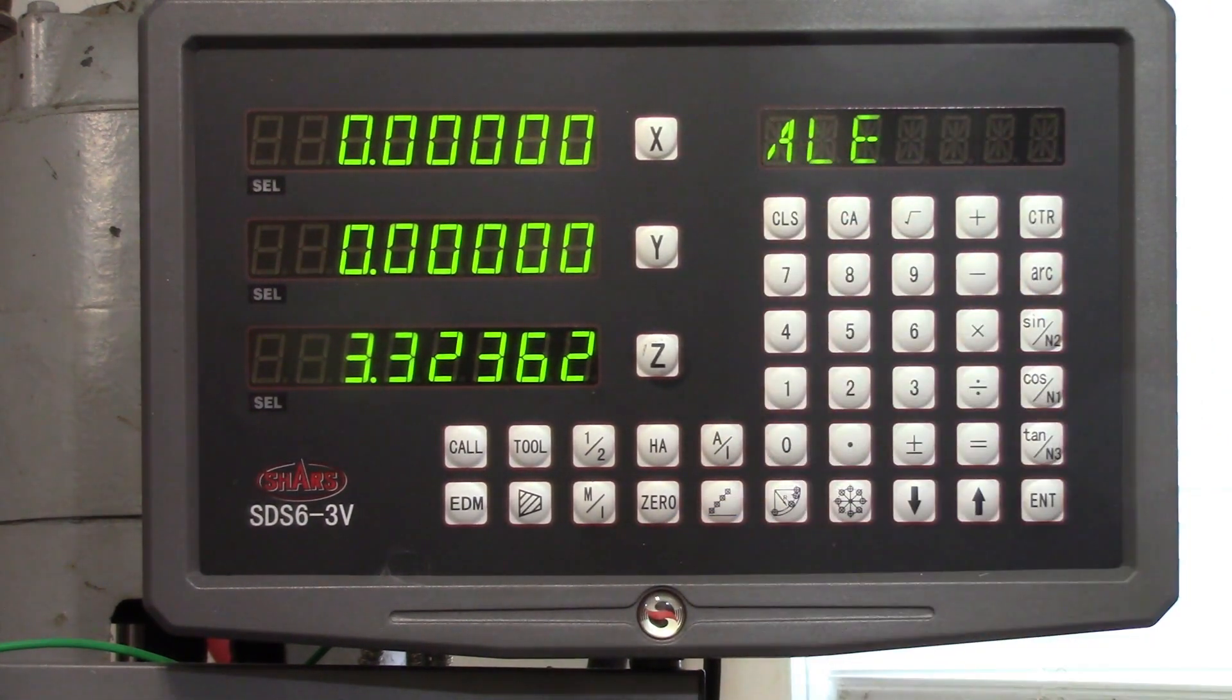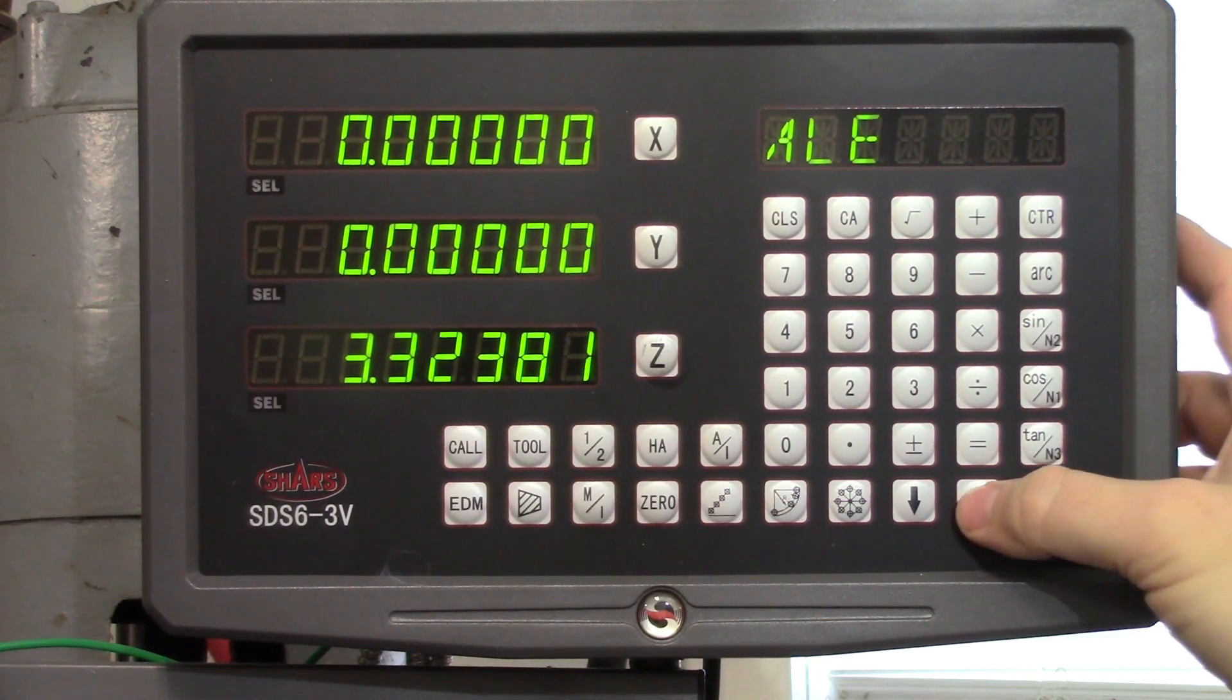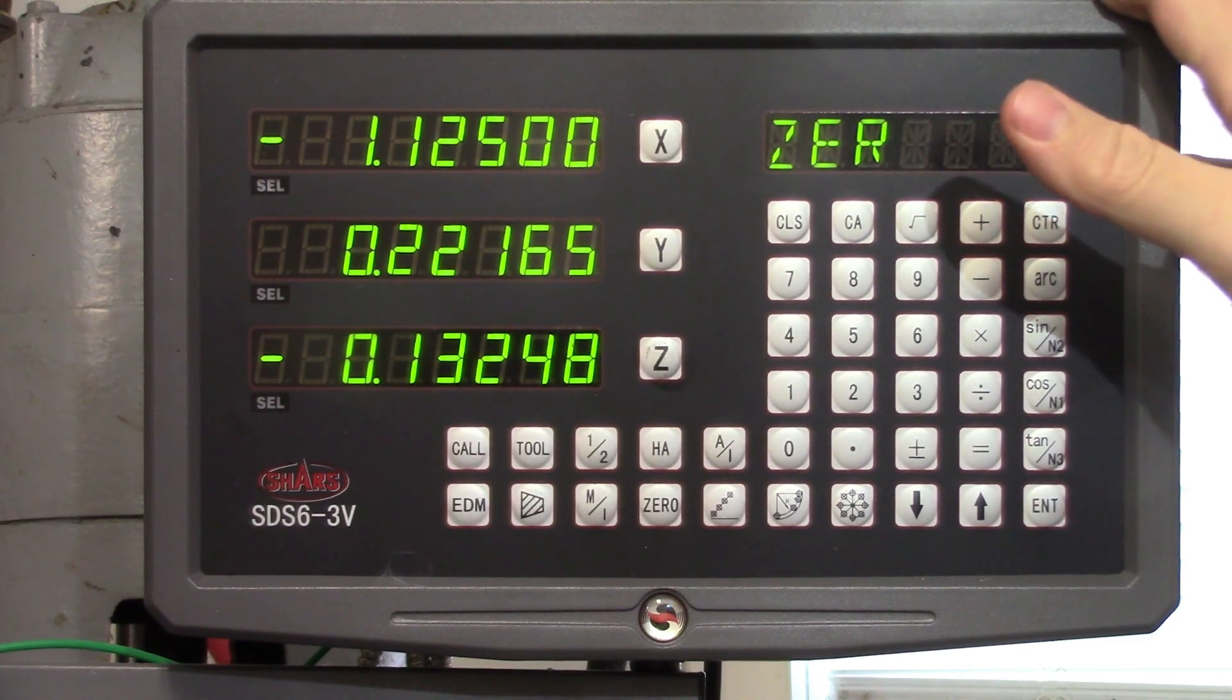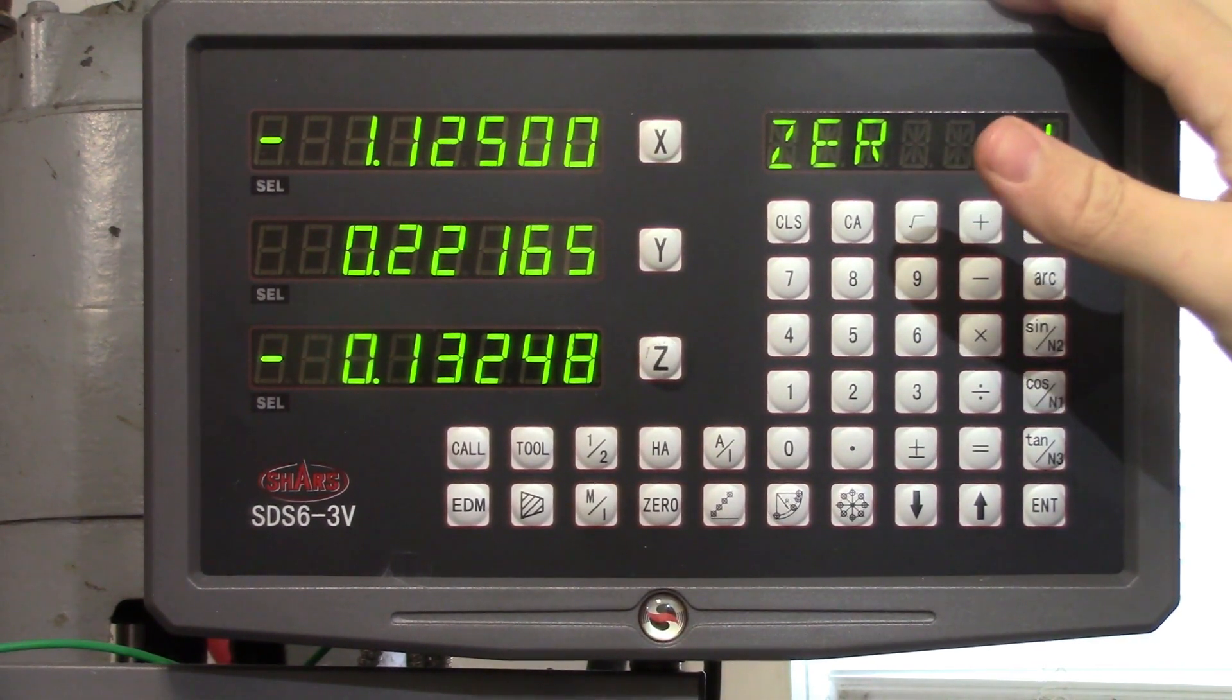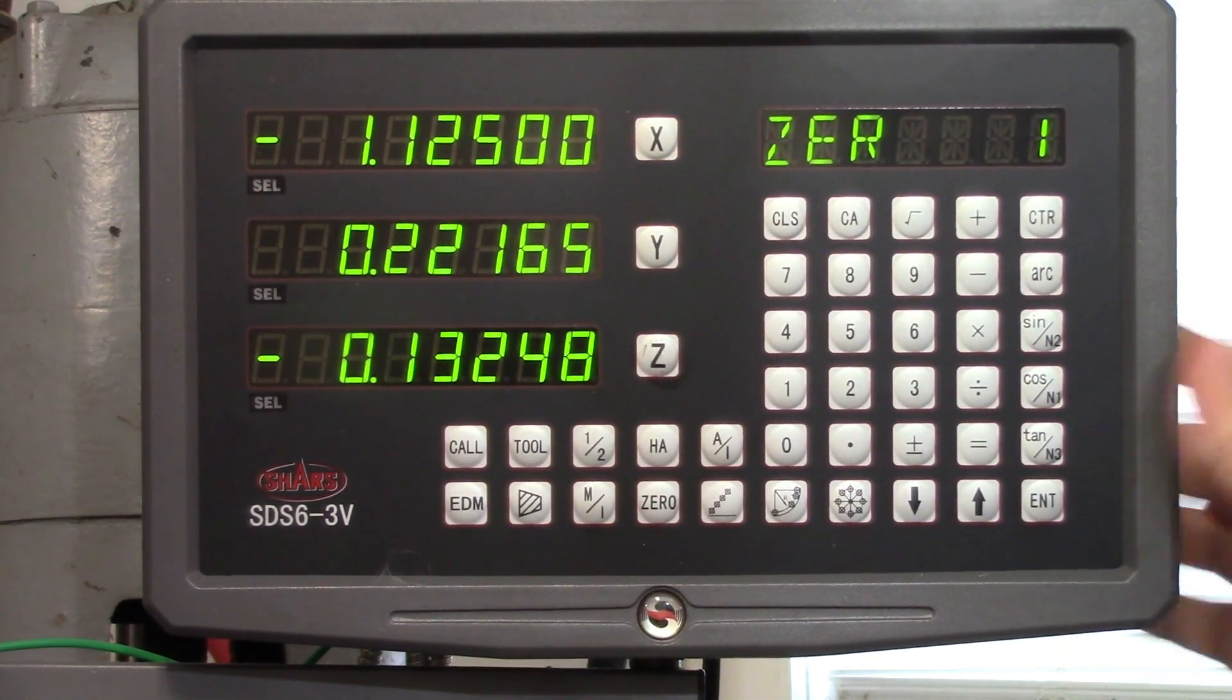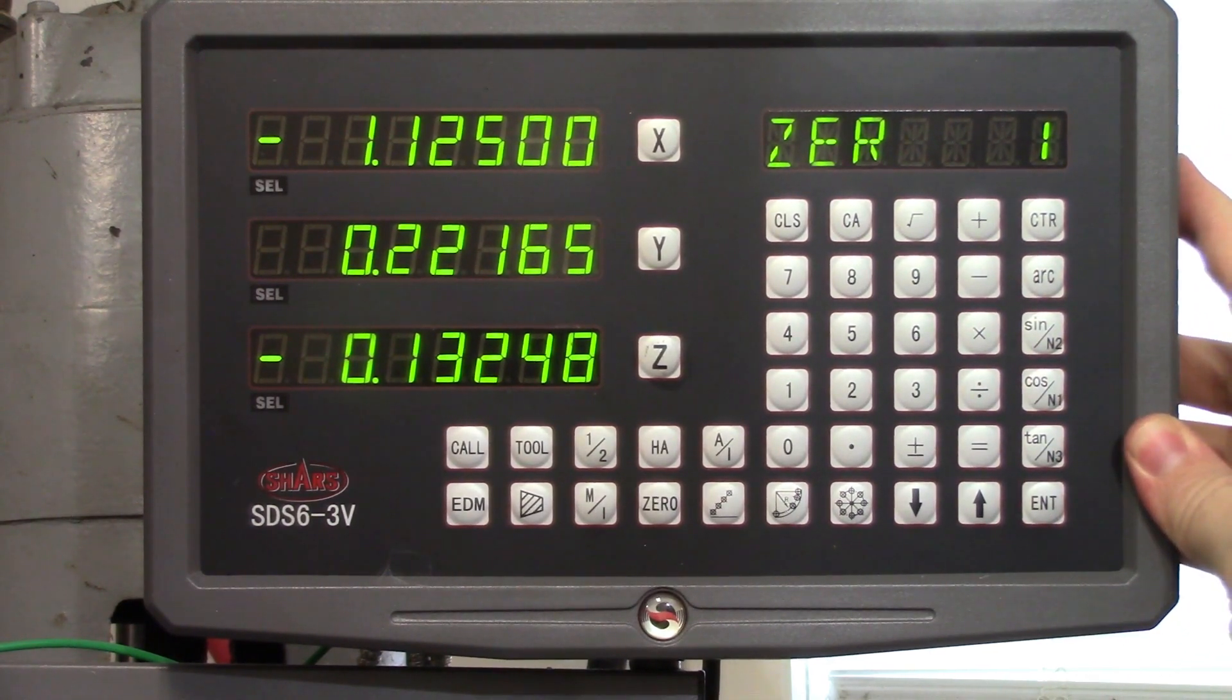On both my lathe and mill DROs, the offsets are linked to the absolute zero. So if I change that, it changes all of the offsets to match. That seems to be pretty typical on the DROs that I've used, but I'm not sure if that's universal among manufacturers. Sometimes this feature is really easy to use, sometimes not, but if you have the option, definitely take the time to figure it out.